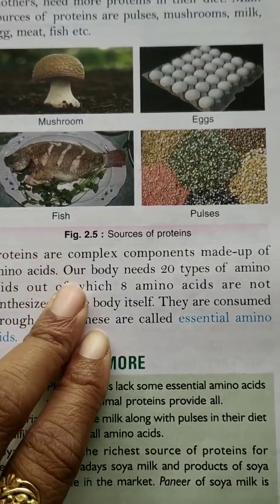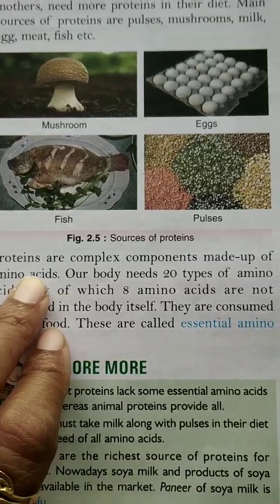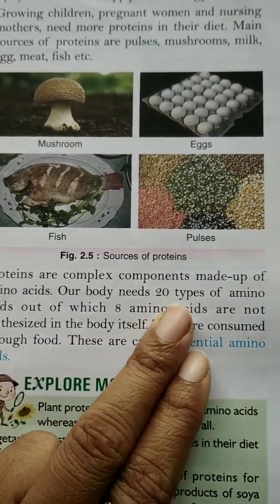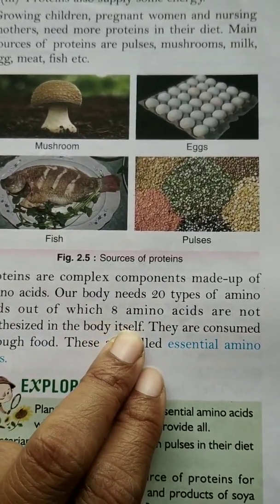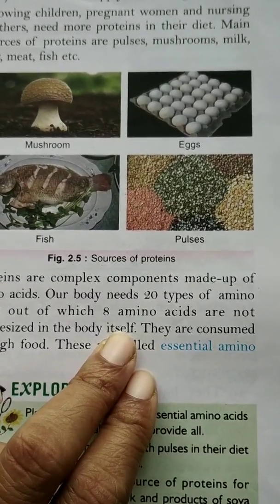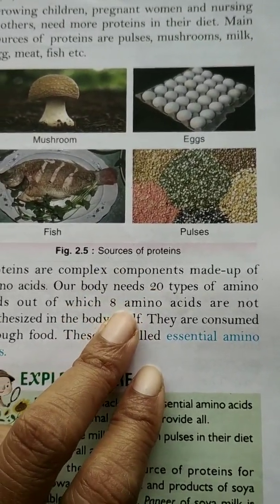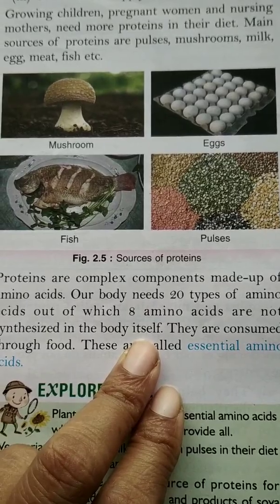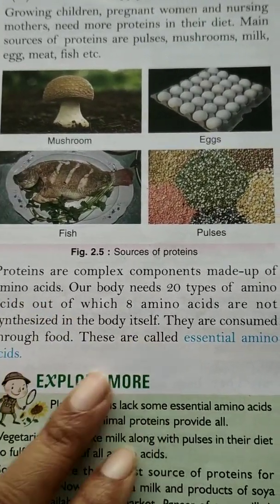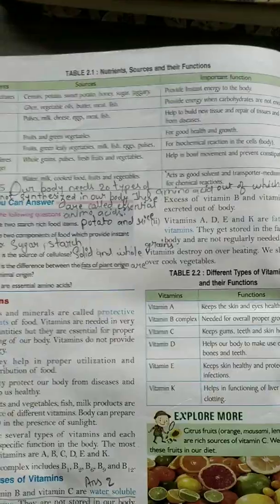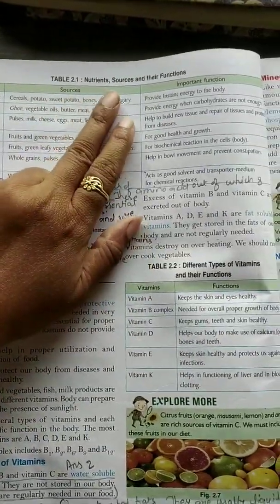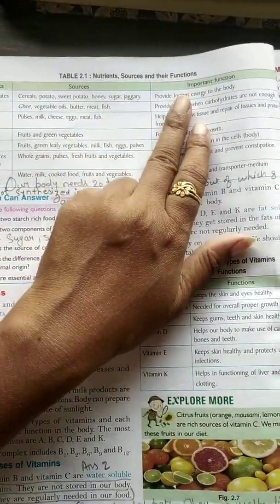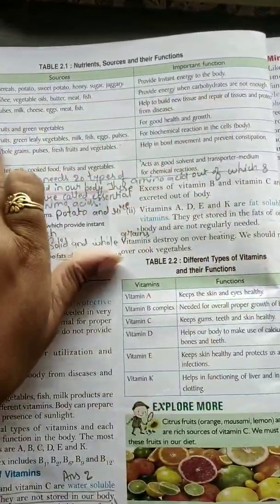Proteins have a complex structure. They are made up of amino acids. There are 20 types of amino acids. Some are synthesized in our body, but the rest are not synthesized in our body — they must be consumed through food. These are called essential amino acids. Here you can see a table in which nutrient sources and important functions of such nutrients are given.